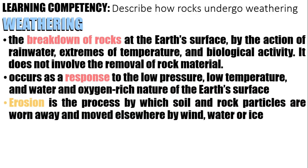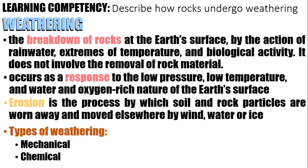Erosion is different from weathering because erosion is the process by which soil and rock particles are worn away and moved elsewhere by wind, water, or ice — so basically, they have agents. That's the main difference. Here, we're going to talk about the two types of weathering: mechanical and chemical.